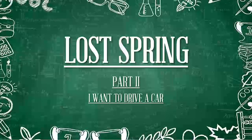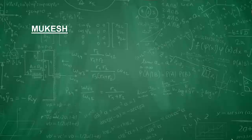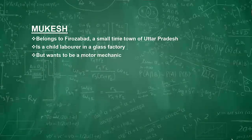We now start with Part Two of Chapter Two from the book Flamingo — 'Lost Spring.' Mukesh, a boy belonging to Firozabad, a small town of Uttar Pradesh, and many other children of his age are working as child laborers in a glass factory. But Mukesh wants to be a motor mechanic.